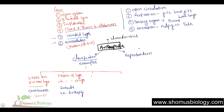Another type has no antennae but four pairs of legs — that is eight legs total. The example in this case is spiders, which are totally different from insects.